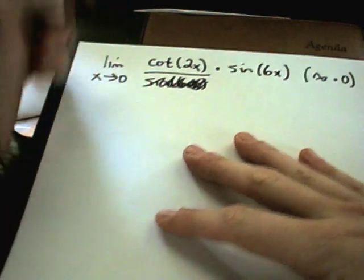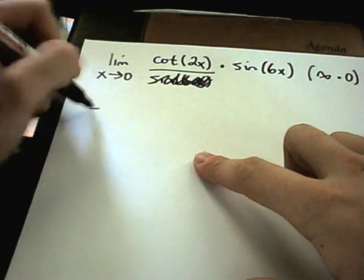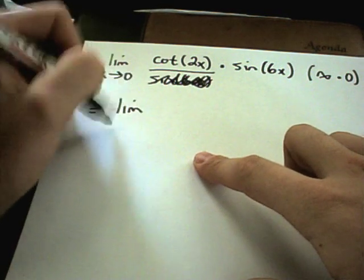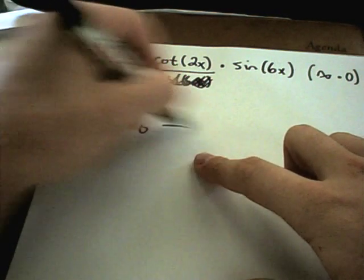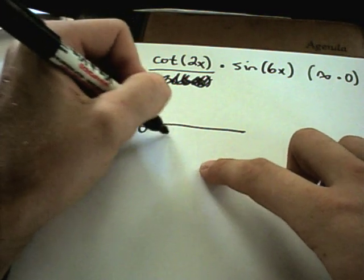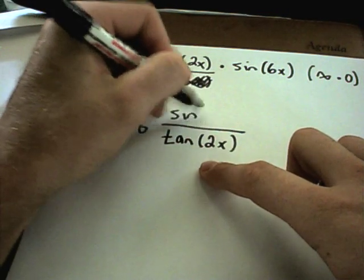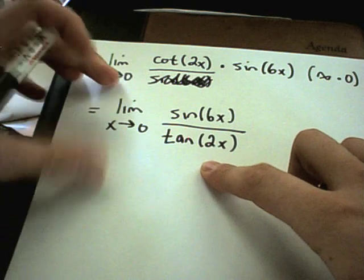Again, I have to put one of these in the denominator. I'm going to put the cotangent in the denominator. And again, I could write it 1 over cotangent, but 1 over cotangent is the same thing as just tangent of 2x. Sine of 6x.